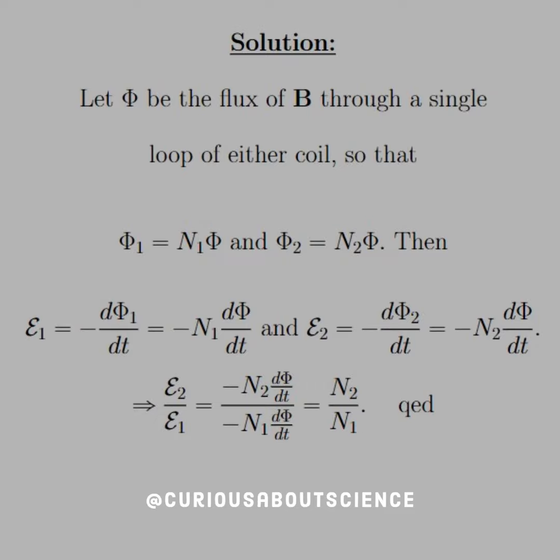All right, so this one's actually pretty easy. Let phi be the flux of B through a single loop of either coil, so that phi1 is equal to N1 times phi, and phi2 is equal to N2 times phi.